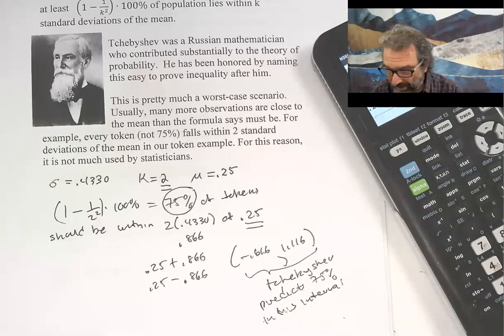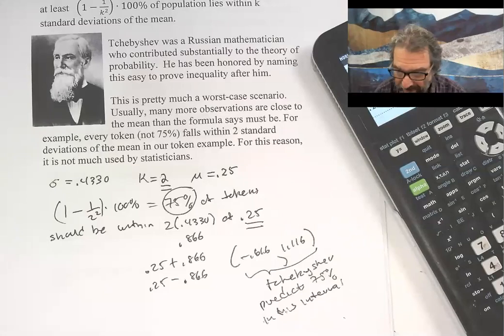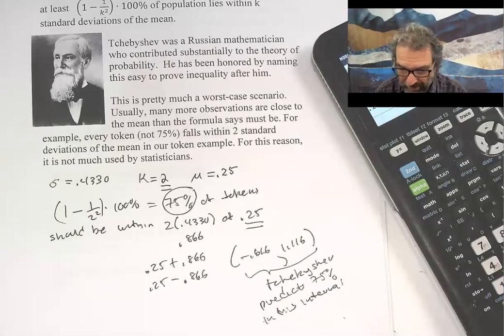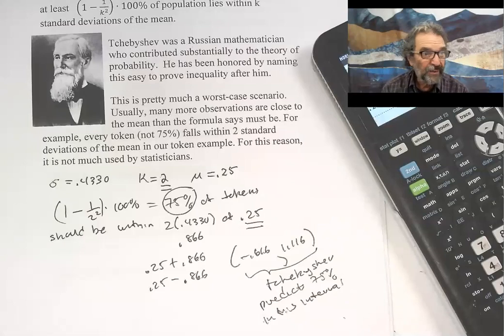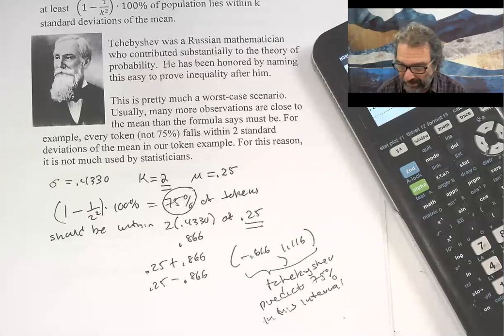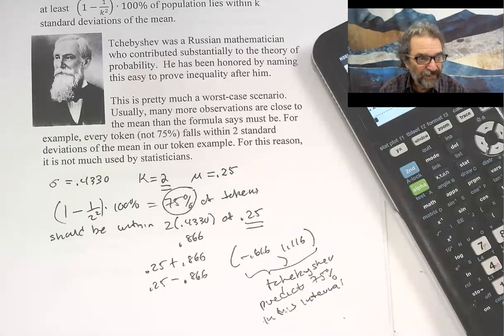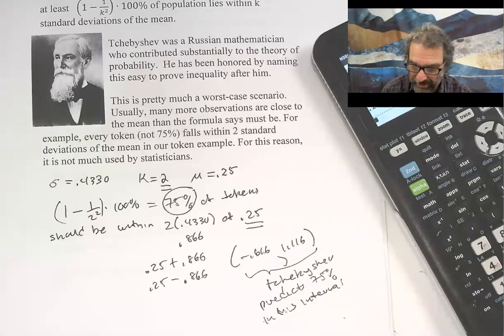Sometimes you use it to prove theorems because the standard deviation is the only information you have. But in statistics, we make other assumptions. The standard deviation alone isn't really very much information about a distribution. Any prediction that only uses standard deviation has to cover all cases, so in most cases it's going to be pretty conservative.